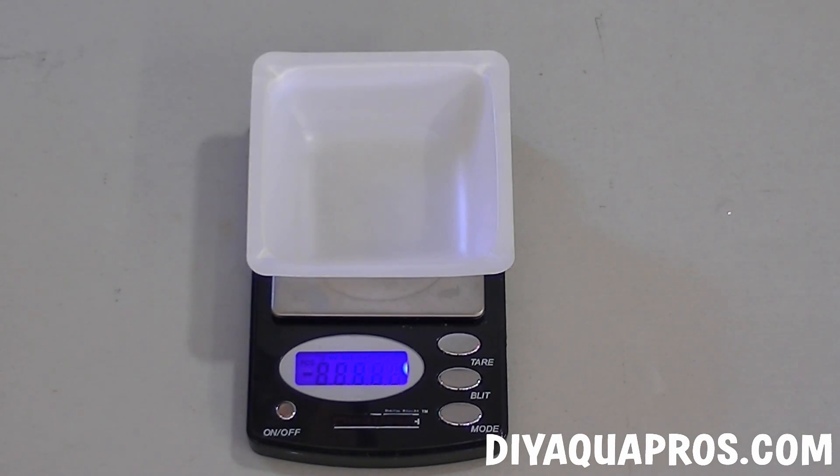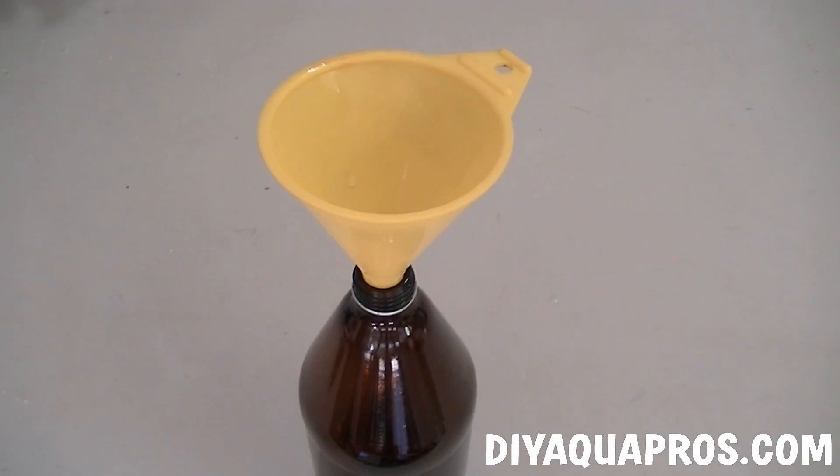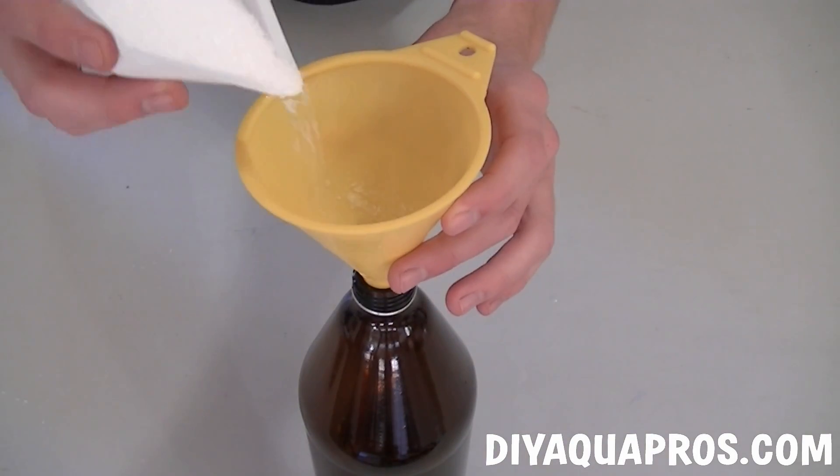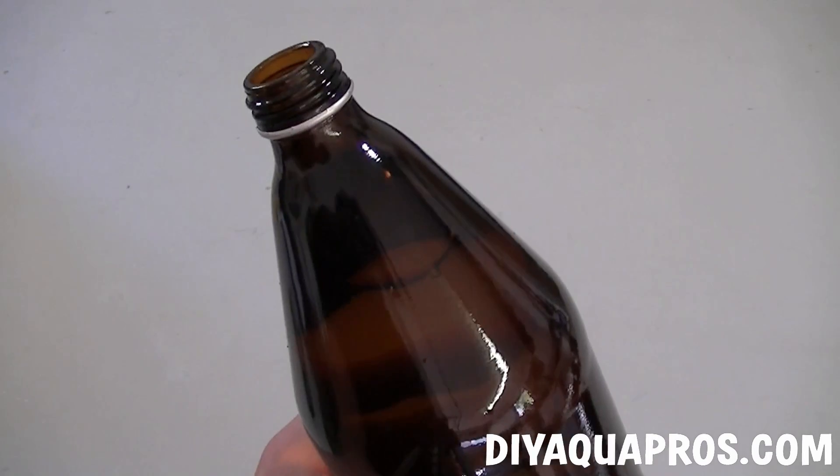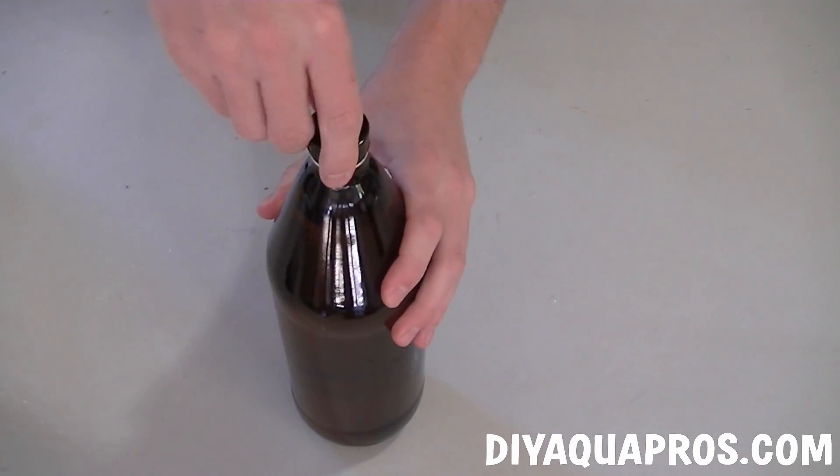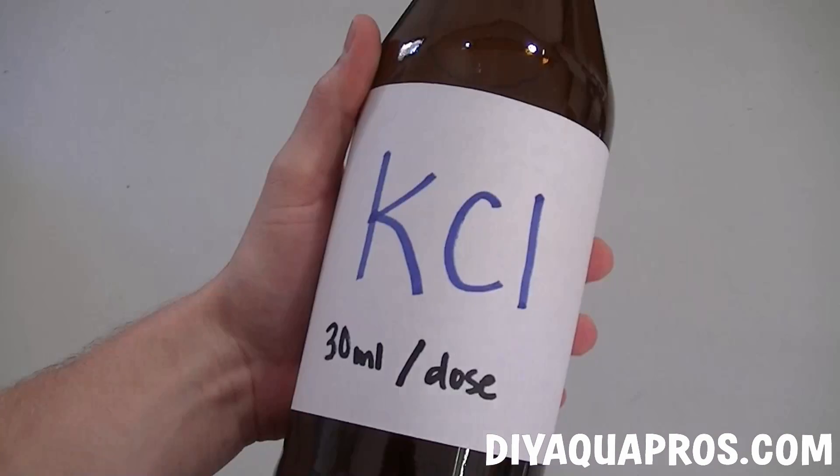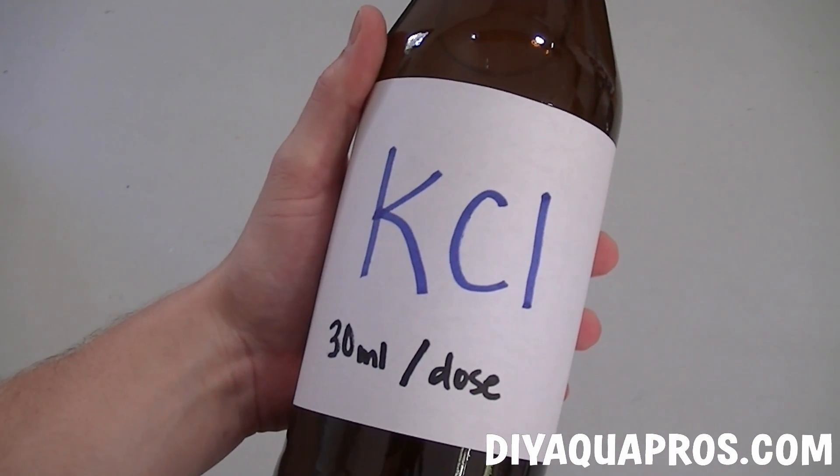Start by turning on your scale and weighing out the appropriate amount of KCL which we calculated previously. Add your fertilizer to your container with the help of a funnel. Next fill your container all the way up to the top with your distilled water. Screw on your cap and shake well for about 30 seconds to dissolve all the fertilizer. Don't forget to add a label with the appropriate dosing information.